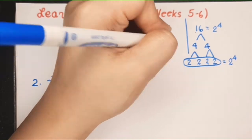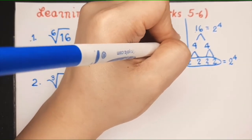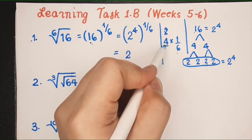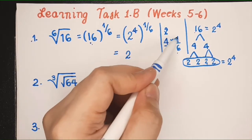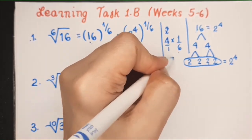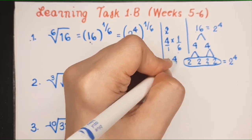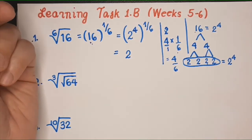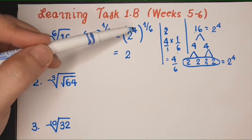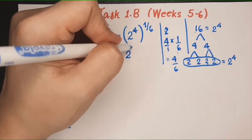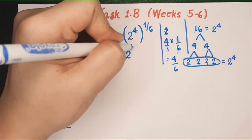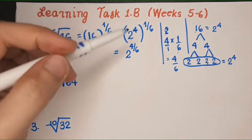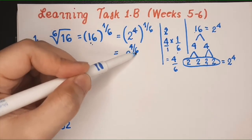4 times 1 over 6: imagine you have 1 here, so it's 4 times 1, you'll get 4. And then 1 times 6, you'll get 6. So you'll have 2 raised to 4 over 6.